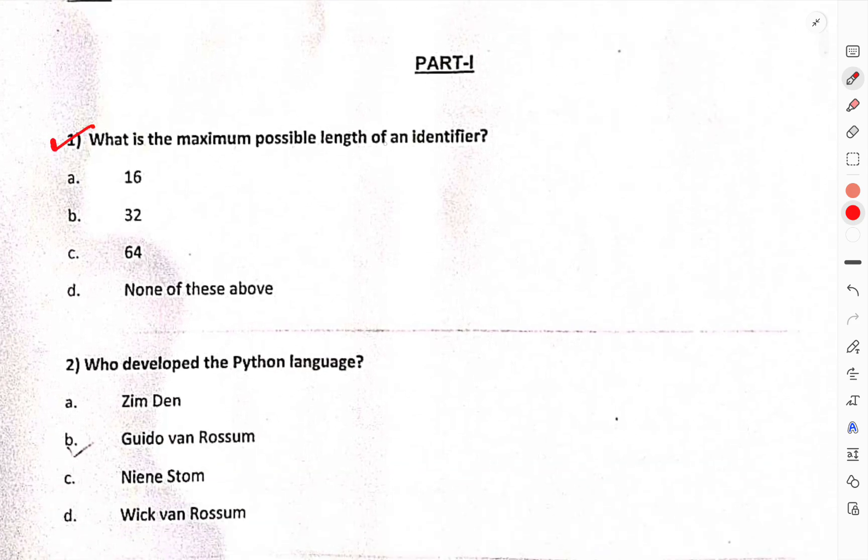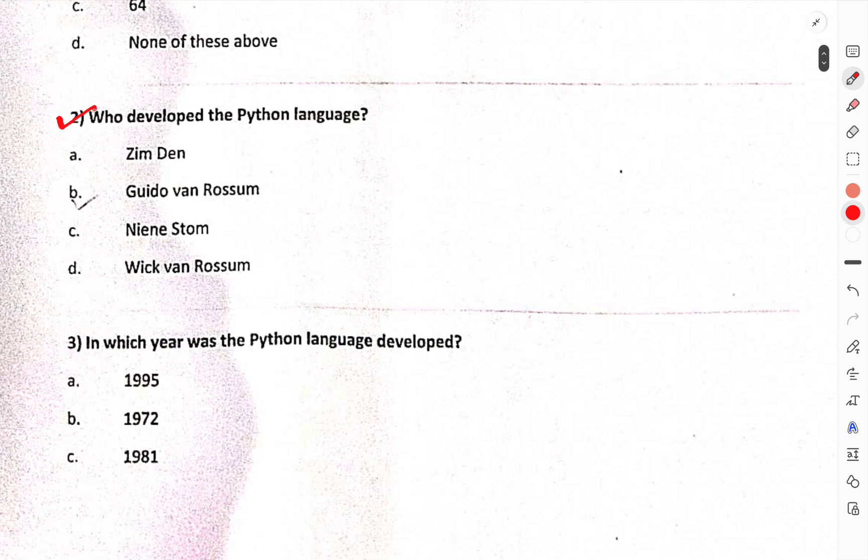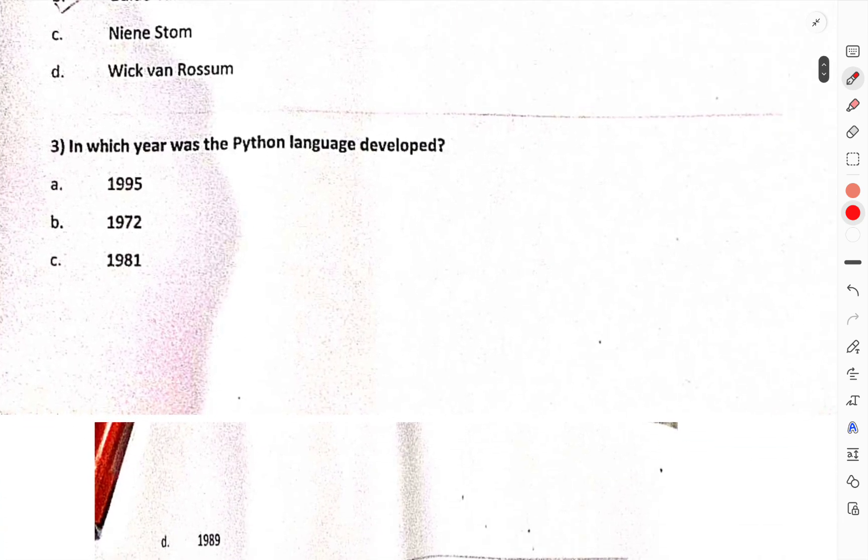What is the maximum possible length of an identifier? This is the correct option. Who developed the Python language? In which year was the Python language developed?